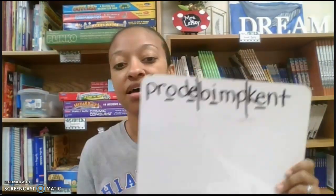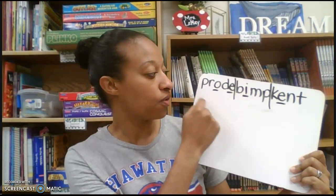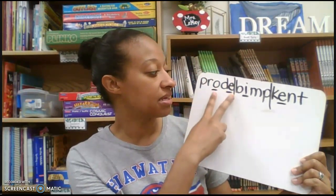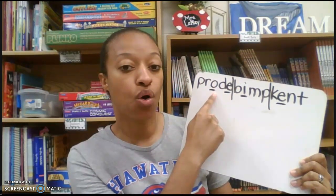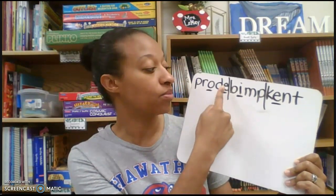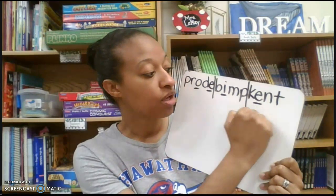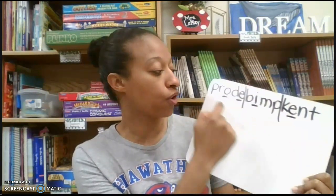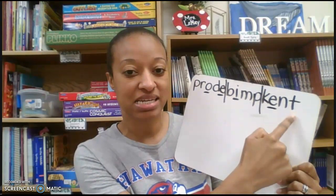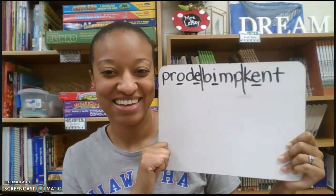Okay, you should look like this. Let's look at our first syllable: vowel consonant E — it is long vowel silent E. Sound of my vowel: O syllable. Prode. Remember, you don't hear that E at the end. Closed: I-B-I-M-P. Closed: E-K-E-N-T. Whole word: Prode-BIMPENT. Lots of E's.